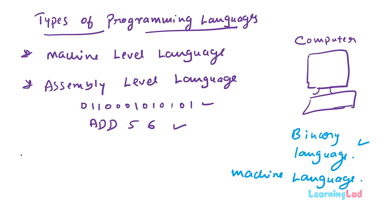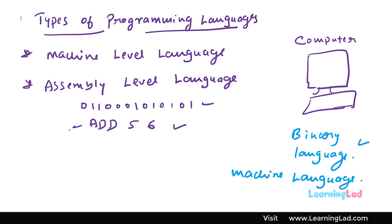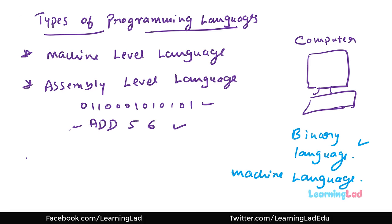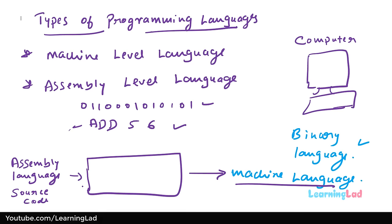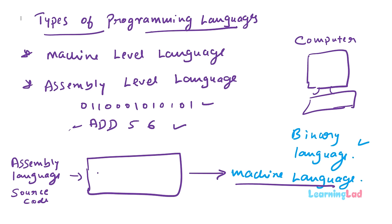The source code written in assembly level language using mnemonic or symbolic codes cannot be directly executed on the computer, because the computer can only understand machine language. So the assembly code must be converted to machine level language. A program called an assembler is used to do this conversion. Assembly level language was much easier to learn than machine level language.